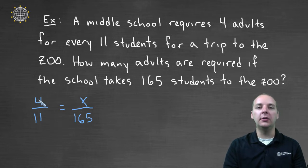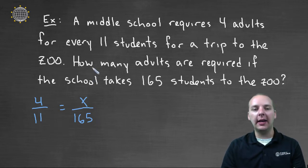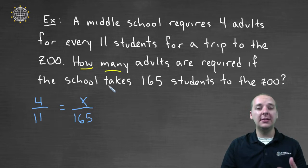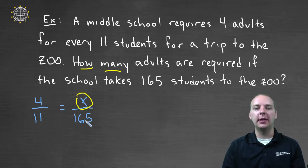If we need four adults for every eleven students, how many adults would we need for a hundred and sixty-five students? So when you see a keyword like how many, that means it's a quantity that you don't know, which is why we express this as a variable, like an x, or a y, or something like that.